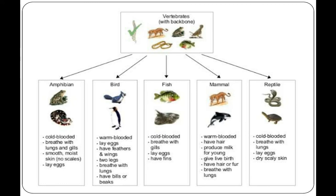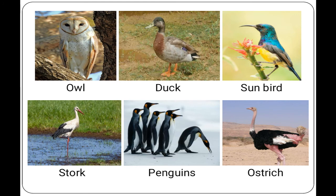The next group is birds. Birds are vertebrates that are warm-blooded, meaning their body temperature does not change with the surrounding temperature. Birds lay eggs with shells. Birds are the only animals with feathers. They also have wings and a beak. Feathers and wings help them fly, though not all birds can fly.